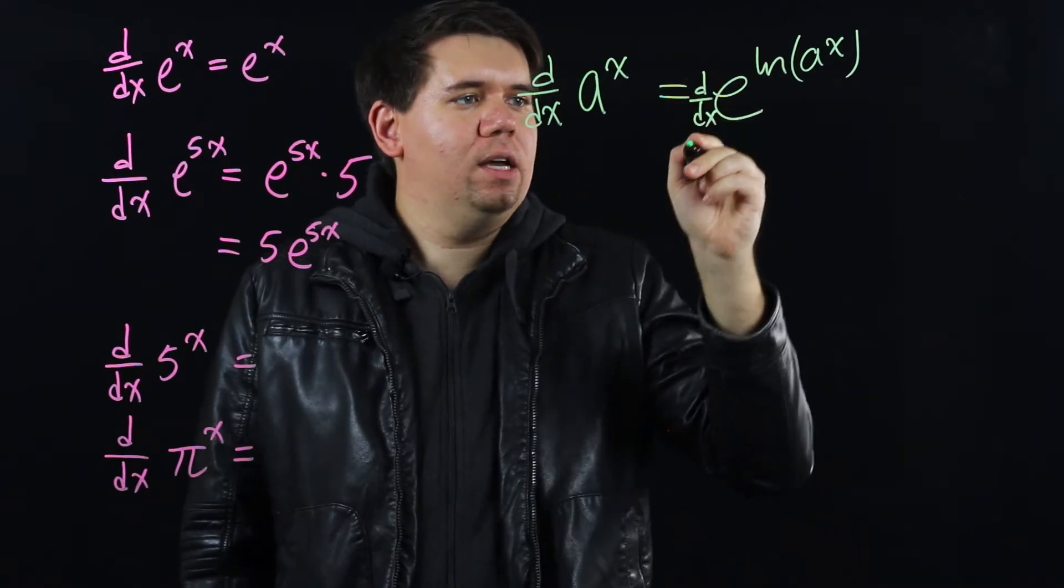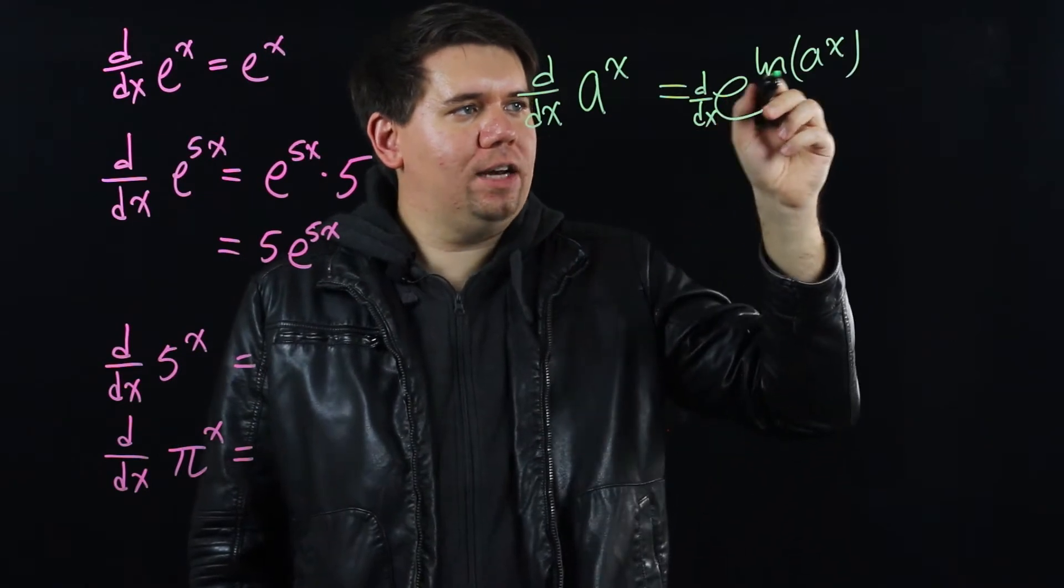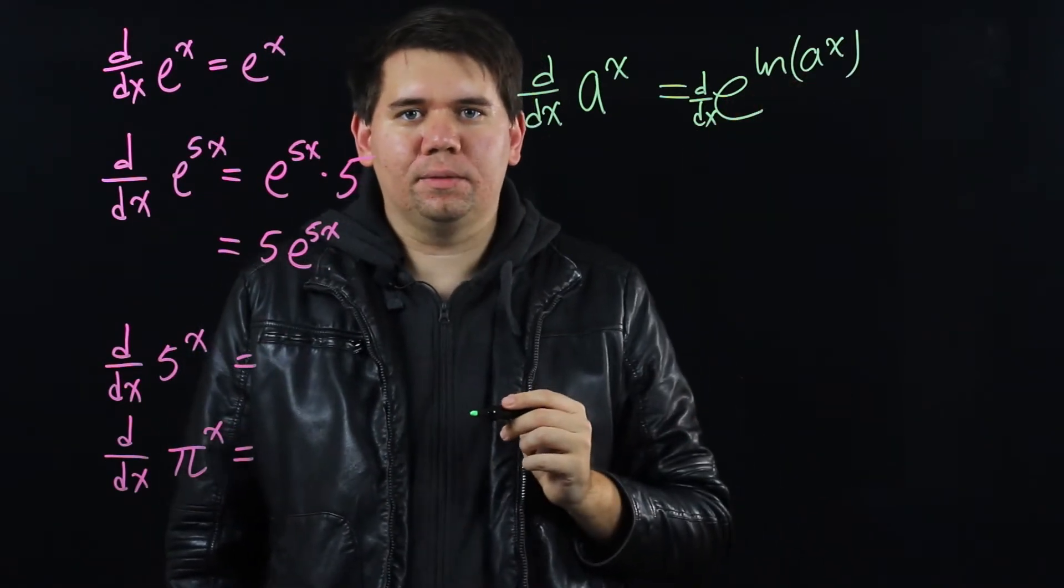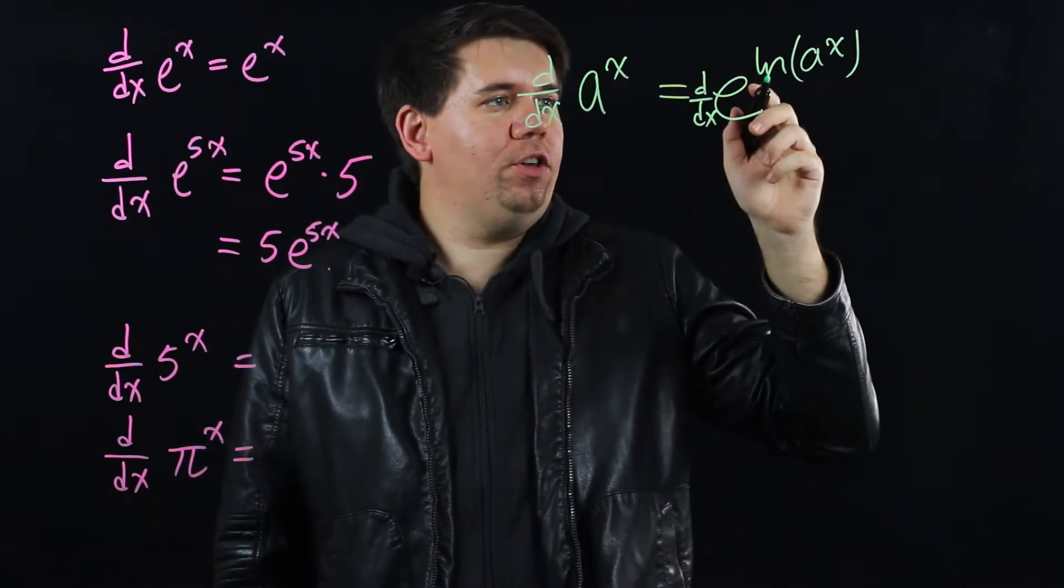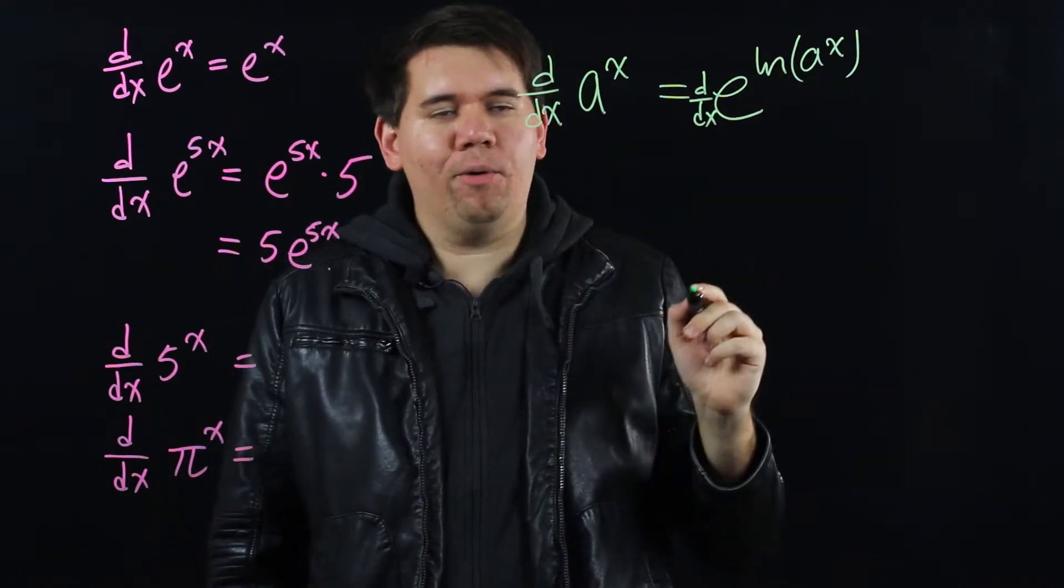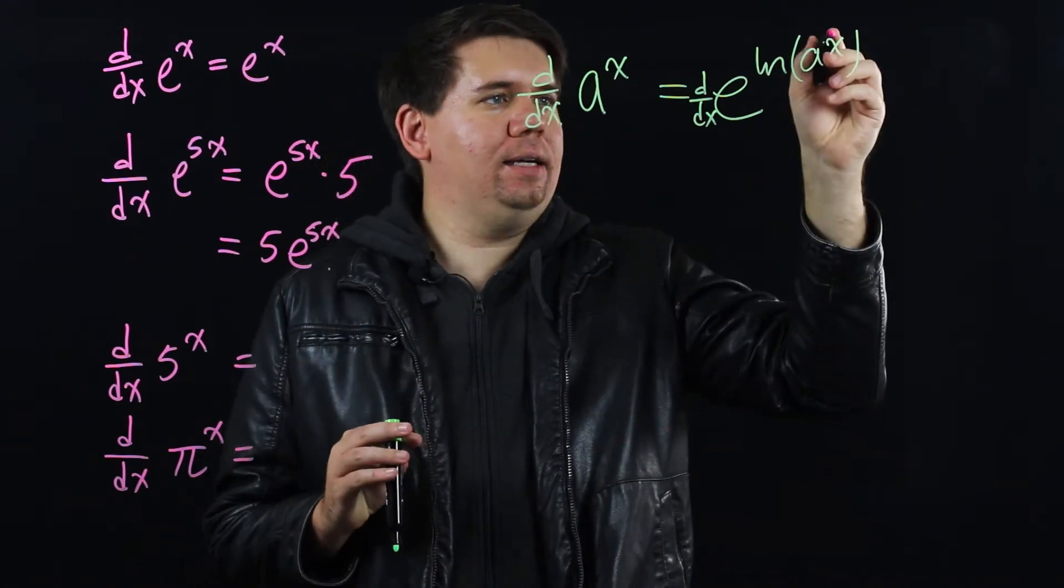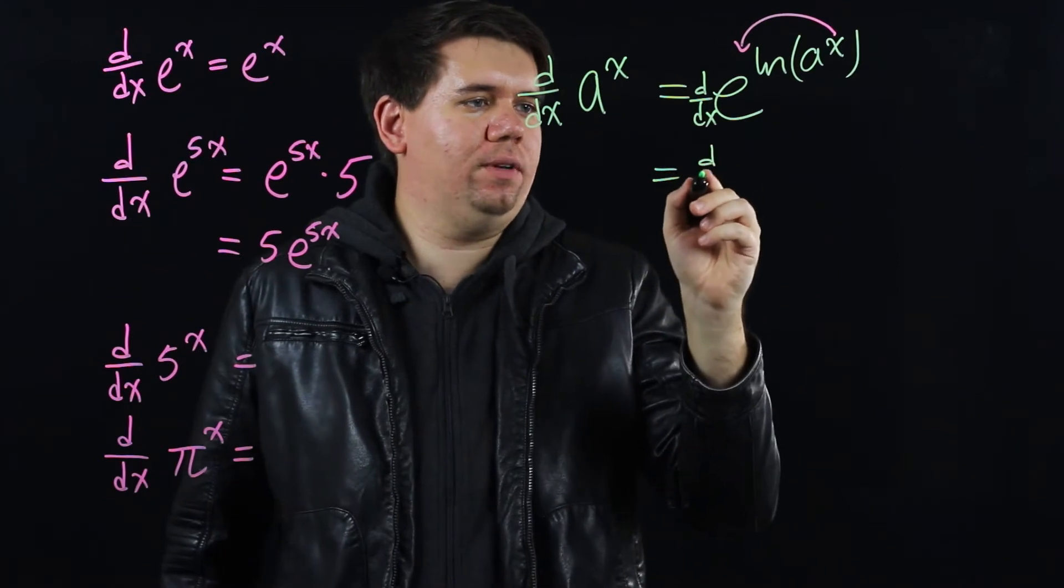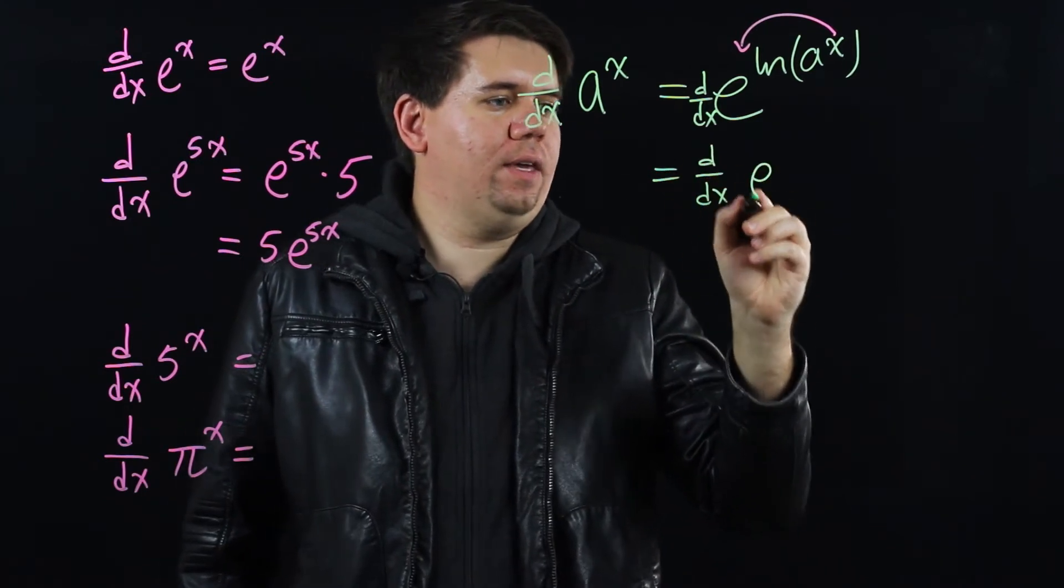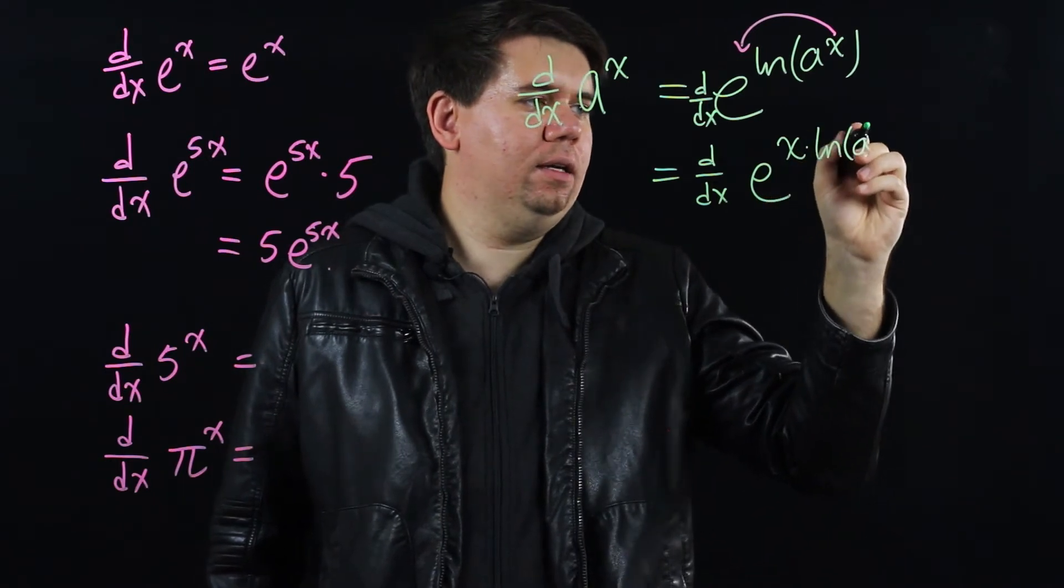So the derivative of a to the x is the same as the derivative of e to the natural log of a to the x. But then natural log has a special property. Whenever you have log of something to a power you can pull that power out front. That x can come out front. And so you get this is just the derivative of e to the x times ln of a.